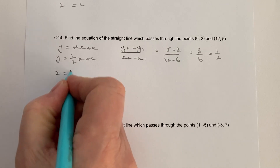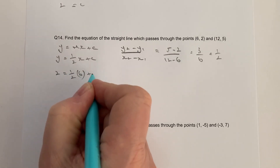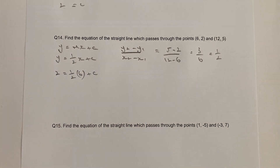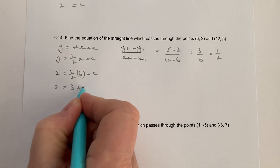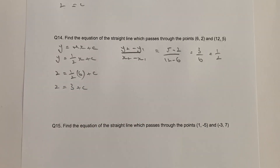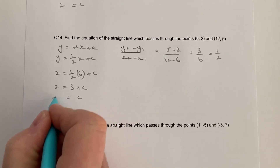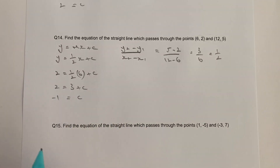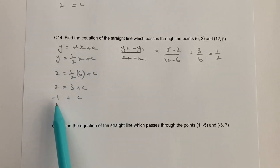So 2 equals a half times 6 plus c, which gives 2 equals 3 plus c. Take away 3 from both sides and c equals minus 1. So now I've got my value of the gradient, which is a half, and my value of the c-intercept, which is minus 1.